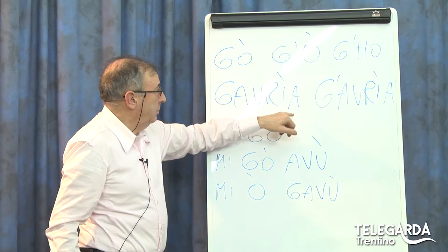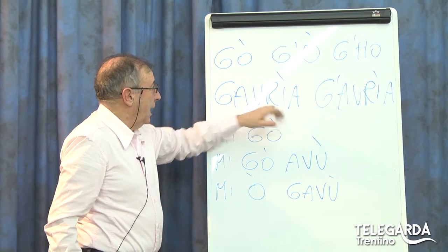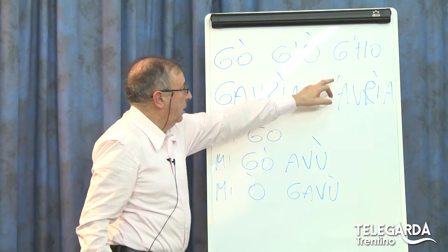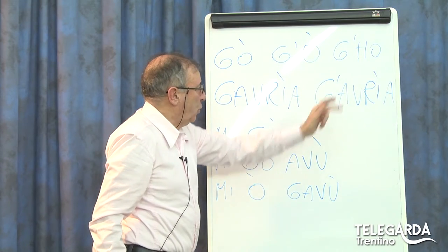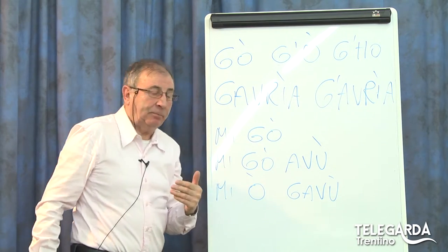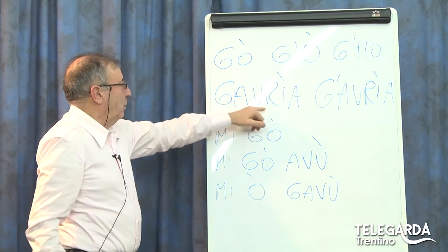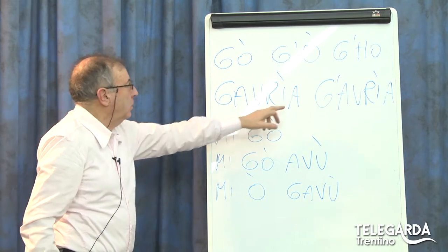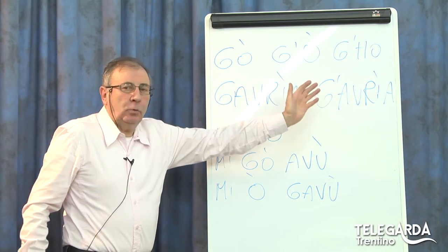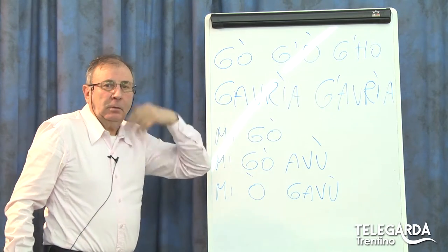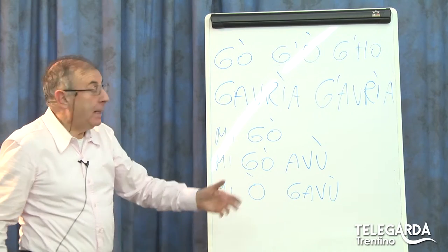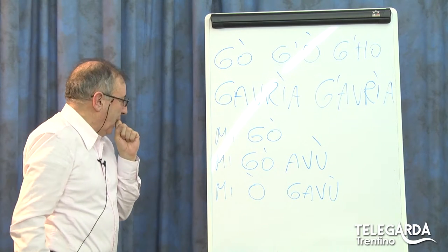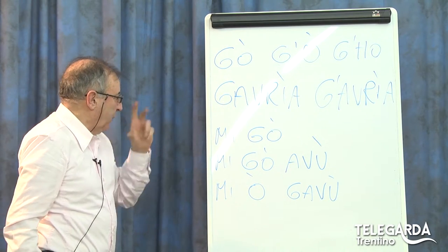Poi, 'gavria': anche qui qualcuno mi ha detto che bisognerebbe mettere l'apostrofo, G apostrofo Avria. Anche qui, la forma più usata è questa, ve lo devo dire, però uno, se vuole, licenza poetica, potrebbe. Ma la cosa più curiosa è su questa forma qua.